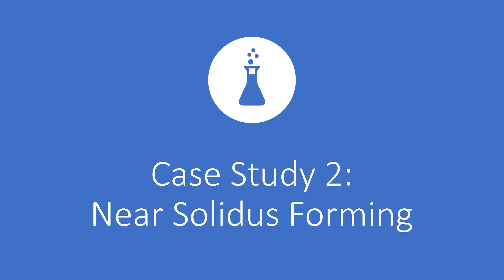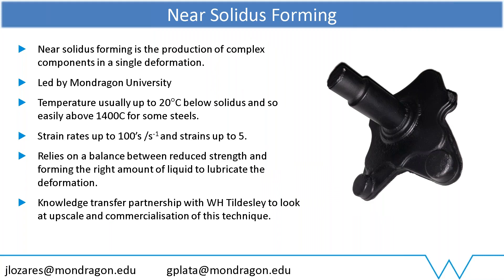The next case study is near-solidus forming — some work I've been doing with the University of Mondragon. This is really next-generation future forming. We're looking at deforming materials at really targeted temperatures, just below the solidus temperature. For some steels, this could easily be above 1400°C — way beyond what conventional forging companies would look at. The strain rates we're talking about are in the hundreds, and strains of five or even higher could easily be possible. What we need from the material at this point is a nice balance: good strength so it holds together, but we need to be able to form it without cracking.